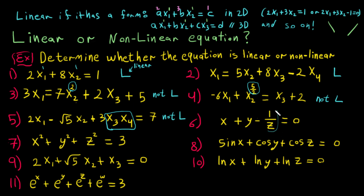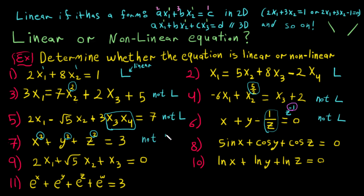Here we have x plus y — linear, linear. And this one is not linear because the variable has exponent negative one, but it should be positive one, so that's why it's not linear. This next one is very obvious — variables are power two, so not linear. And this one has a function like sine of x, which is not linear.